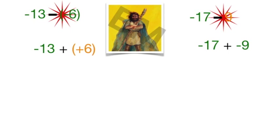Now we just have our new groups. Thirteen thieves meeting with six soldiers — thieves win, but only by seven. On the other side, seventeen thieves meeting with nine thieves — there's no fight, no diminishing of numbers. It's just how many thieves showed up: twenty-six. What are they? Still thieves — so negative twenty-six.